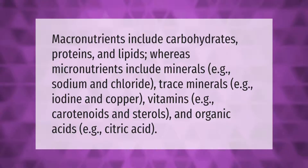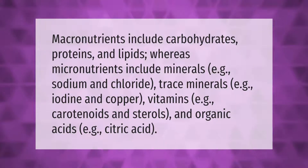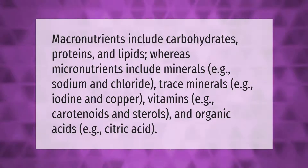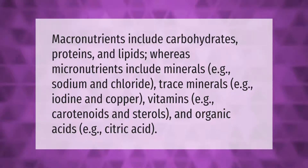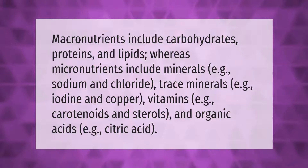Macronutrients include carbohydrates, proteins, and lipids, whereas micronutrients include minerals (e.g., sodium and chloride), trace minerals (e.g., iodine and copper), vitamins (e.g., carotenoids and sterols), and organic acids (e.g., citric acid).